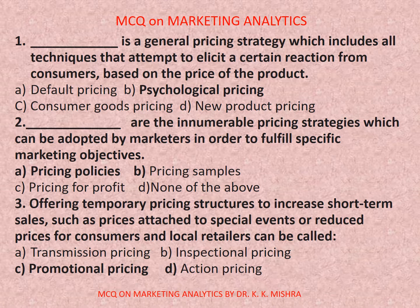Question number three: Offering temporary pricing structures to increase short-term sales, such as prices attached to special events or reduced prices for consumers and local retailers, can be called? Options are: a) transmission pricing, b) inspectional pricing, c) promotional pricing, d) action pricing. Correct option is c) promotional pricing. Now move to next slide.